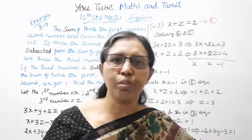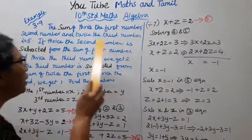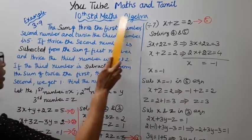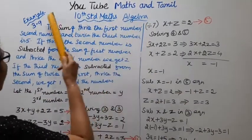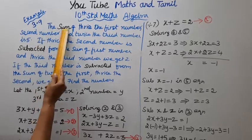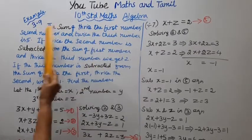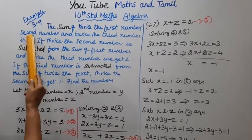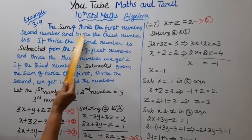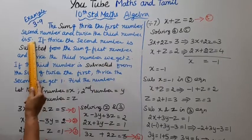Hello students, welcome to Max and Tramble channel. 10th Standard Maths Algebra, Example 3.9. The sum of thrice the first number, second number and twice the third number is 5.